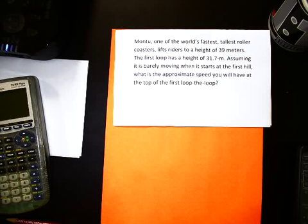So Montu is the name of the roller coaster, and it lifts riders to a height of 39 meters. It has a loop-de-loop, and that first loop is 31.7 meters tall. So assuming that it is barely moving when it starts that first hill, so you know in a roller coaster, you go up the top first hill there, and you kind of go over the crest, and you're barely moving, and then you go down the hill, you speed up. How fast will you be going at the top of the first loop?